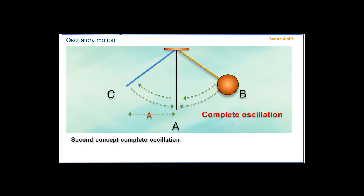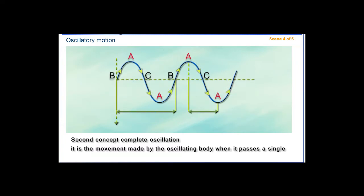Second concept: complete oscillation. It is the movement made by the oscillating body when it passes a single point in its path of motion two consecutive times in the same direction.